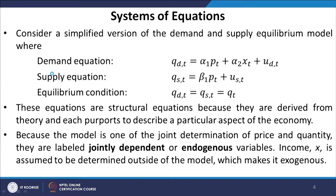Consider a simplified version of the demand and supply equilibrium model, where we have a demand equation. Here D refers to demand with respect to a particular time period t, expressed as a function of the price of that product and another exogenous variable xt. Similarly, we have a supply equation where qst denotes supply at time t, which is again a function of pt, the price of the product, with error terms. Finally, the equilibrium condition states that quantity demanded equals quantity supplied, denoted simply as qt.